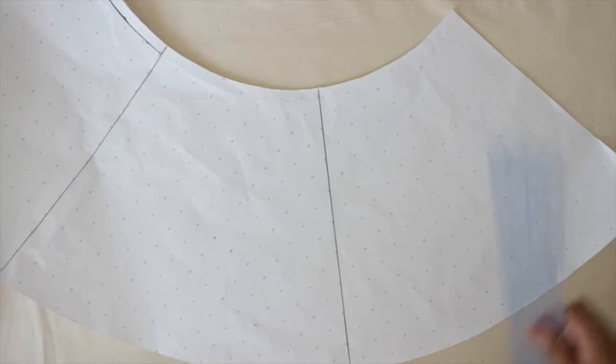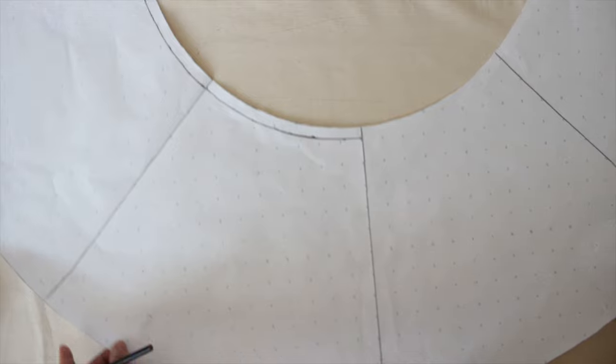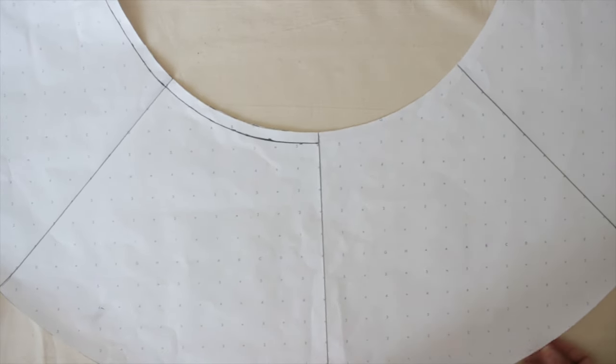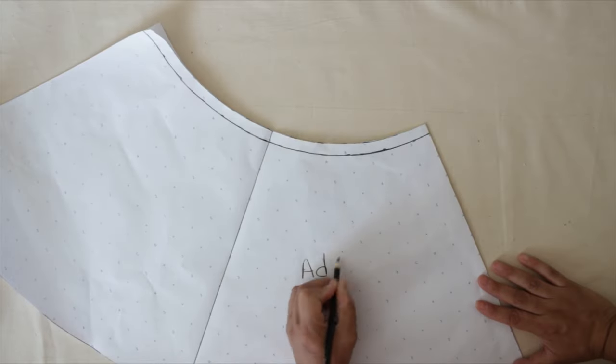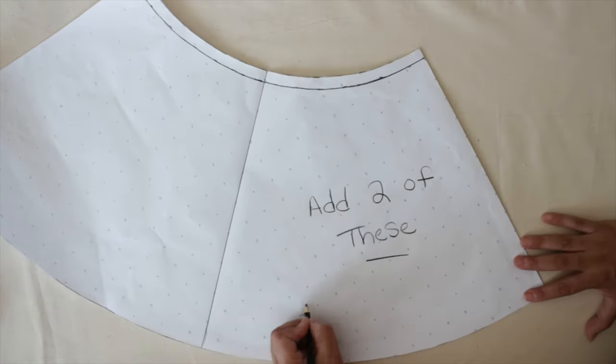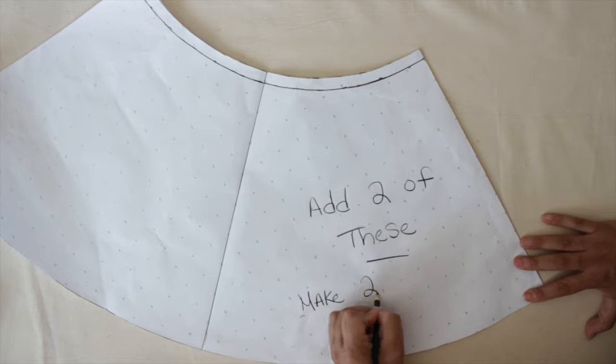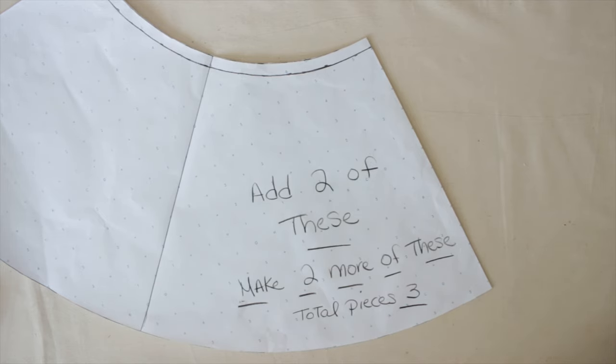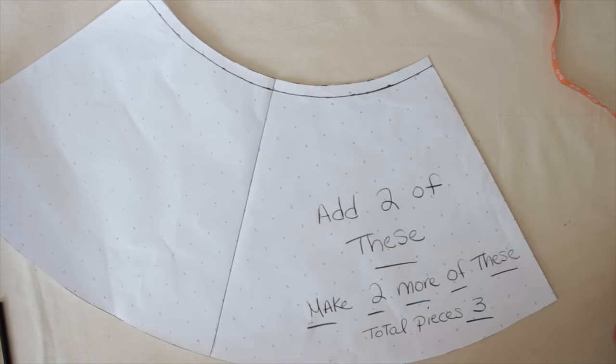Now, this part might get a little confusing, but stay with me. You have to make three pieces of this, but not yet because we're not finished making the pattern. But for now, you can write on the pattern. You can put, add two of these or make two more of these. However you want to write it, the total pieces have to be three. The reason for this is because I don't want you to waste pattern paper. So what I do is I make one and I put it on the fabric to cut three times. Because what's the sense of making three of the same thing on paper?